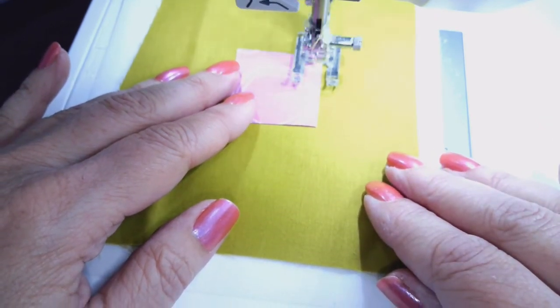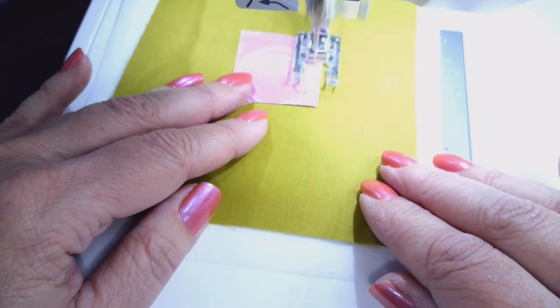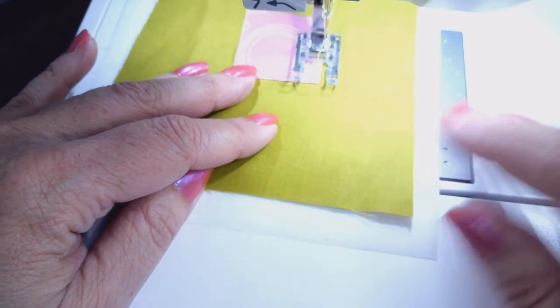I'm going to go down and do my satin stitch. Again, with a width of about 3½ and a stitch length of 0.4 or 0.5.